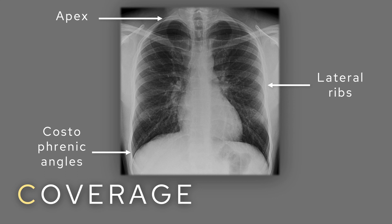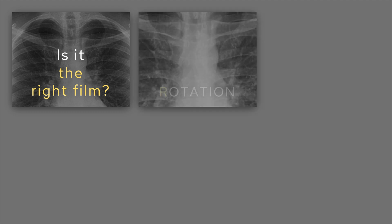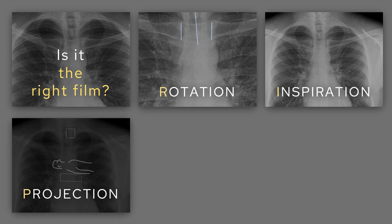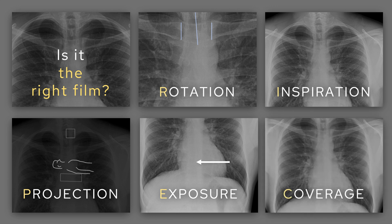To recap: first, is it the right film? That's probably the most important step. Second, is there any rotation — are the spinous processes equidistant from the medial clavicles? Third, is there adequate inspiration — can you see six anterior ribs above the left hemidiaphragm? Fourth, what's the projection — is it AP or PA — and can you comment on heart size and mediastinal structures? Fifth, is there adequate exposure — can you see the vertebrae and the spaces between them clearly? And sixth, is there adequate coverage — can you see the apex, lateral ribs, and costophrenic angles?